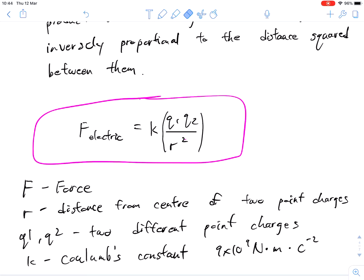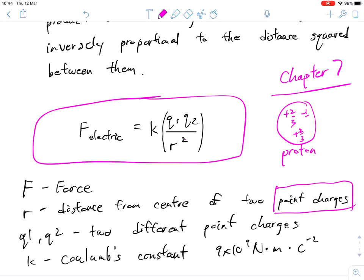These are quick definitions of the different variables. F stands for force, the electrostatic force at this point. R is the distance from the center of two point charges. Now, just very quickly, the idea of point charges. We're going to draw on knowledge from chapter 7, and you'll remember that a proton has two up quarks and a down quark, or a different way to write that, the up quark is plus two thirds, plus two thirds, and minus one third, which is our down quark.